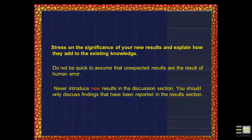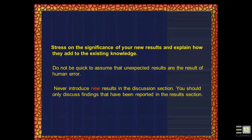You cannot introduce new results in the discussion section. The discussion must discuss the findings you have already reported in the results section. If you have additional results you want to include, go back and add them properly to the results section. Occasionally a reviewer finds a paper where new results appear only in the discussion — this is wrong.